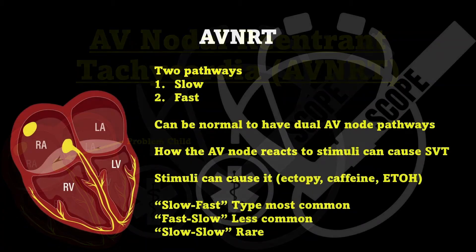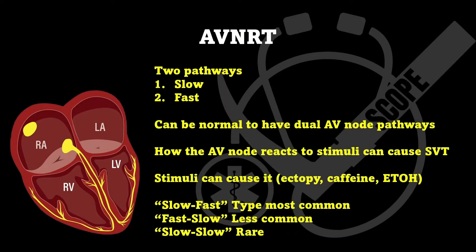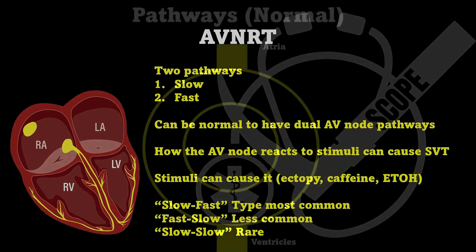Our AV node has two different pathways: a slow and a fast pathway. It can be normal to have dual AV node pathways, but how our AV node responds determines if we get SVT or not. The most common type of AVNRT is slow-fast, which is about 90% of all AVNRTs. The next is fast-slow, and the final one is slow-slow.